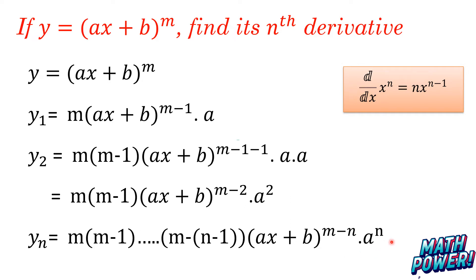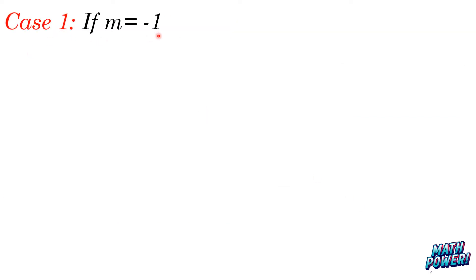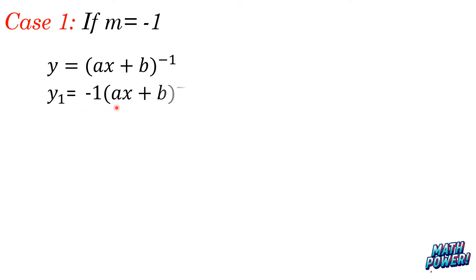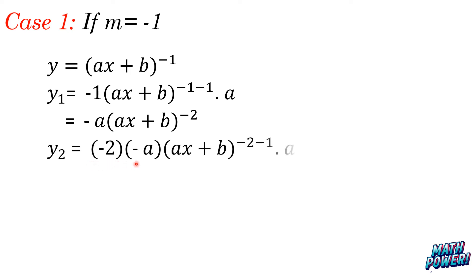Case 1: if m is equal to -1, y equals (ax + b)^(-1). When we differentiate y, it can be written as -1 times (ax + b)^(-1) times a, simplified as -a times (ax + b)^(-2). When we again differentiate y1, we get y2 equal to -2 times (-a) times (ax + b)^(-3) times a.